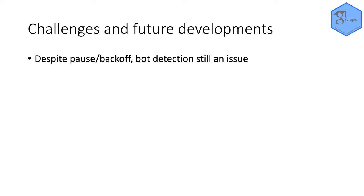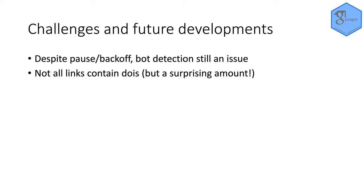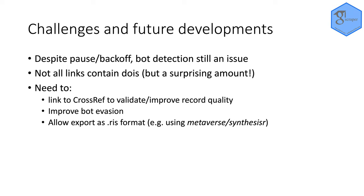There are some challenges though. Despite the pause and back-off, bot detection is still an issue so there's a need to tweak and improve it. I've tried using IP-based approaches but that's much harder and I'm not an expert in that. Another issue is that not all links provided by the publisher contain DOIs, though I was surprised by how many did. Future work includes building a link to CrossRef — some work has been done but it needs tweaking to validate extracted records. Some existing tools like Publish or Perish get much of this information but don't get the description or the DOI, so that's a unique improvement. I also want to improve bot evasion and allow exporting as RIS format files, probably using the Synthesizer from the metaverse package.